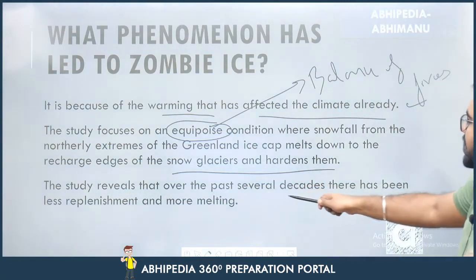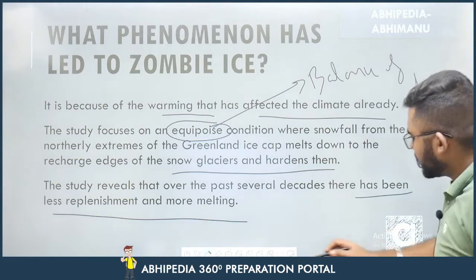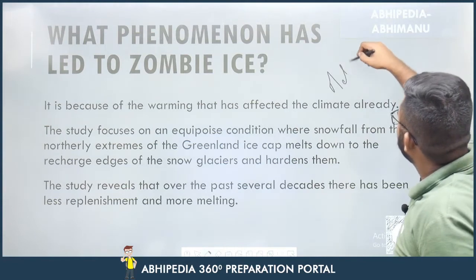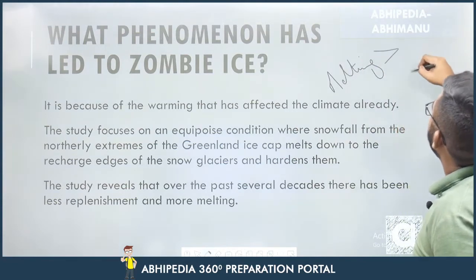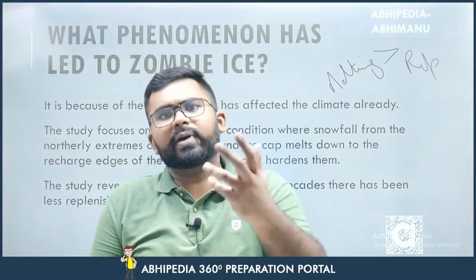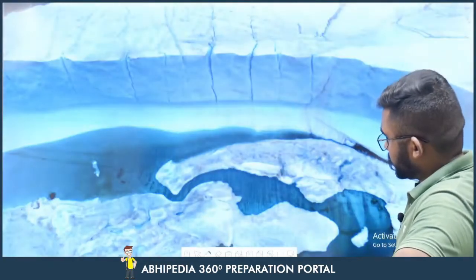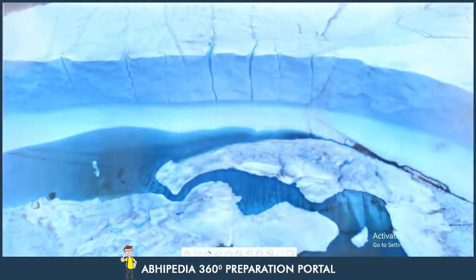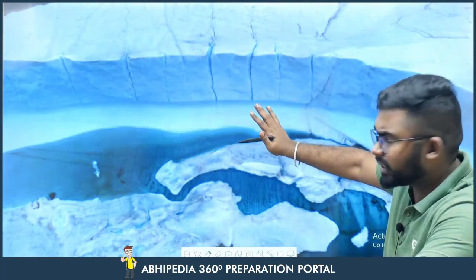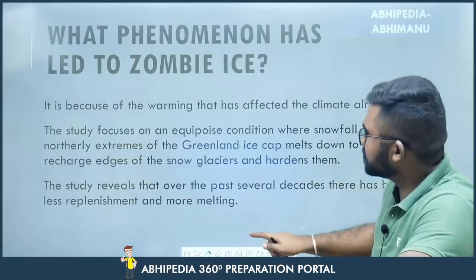The study reveals that over the past several decades, there has been less replenishment and more melting. The crux is that melting is more than replenishment, which means the ice will shrink away. At the edges, what should happen is that melted material should refreeze — but now it melts away instead. So this is the core concept behind Zombie Eyes.